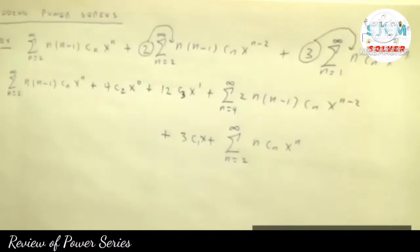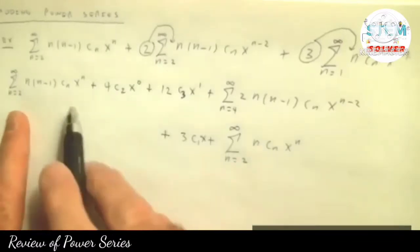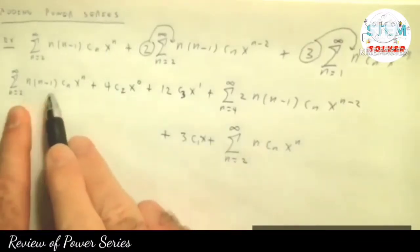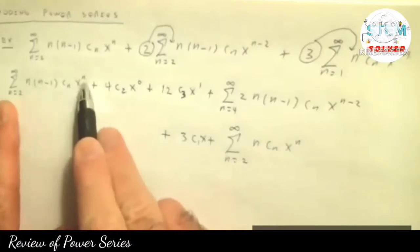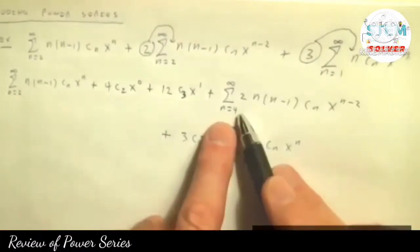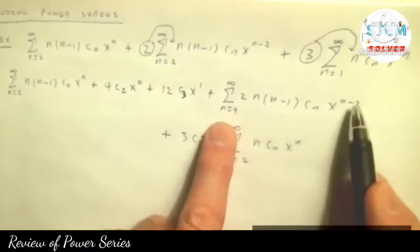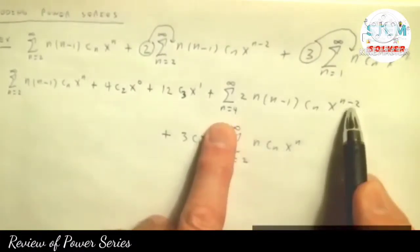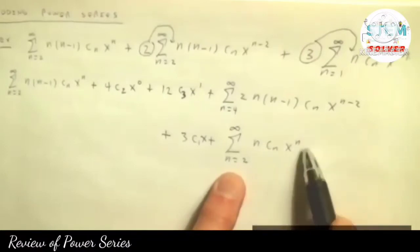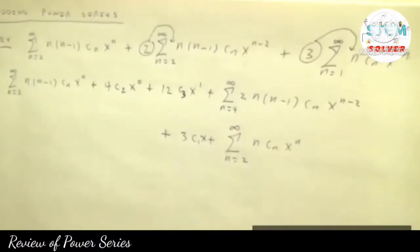So that's what's called running out terms. The first thing you want to do is make sure all the power series start at the same power — we'll fix the index in the next step. When you plug in 2, you'll get x squared for the 1st series. When I plug in 4, I'll get x squared for the 2nd one. When I plug in 2, I'll get x squared for the 3rd one. So they all start at x squared now.